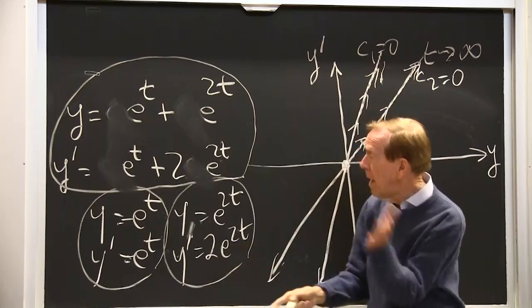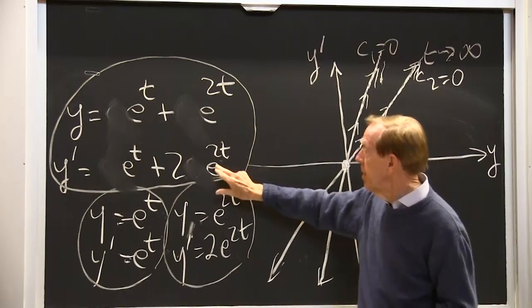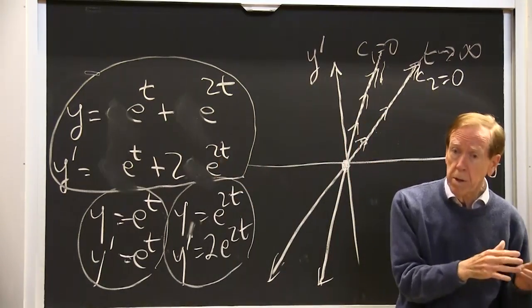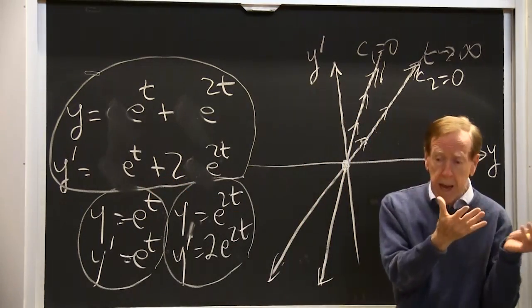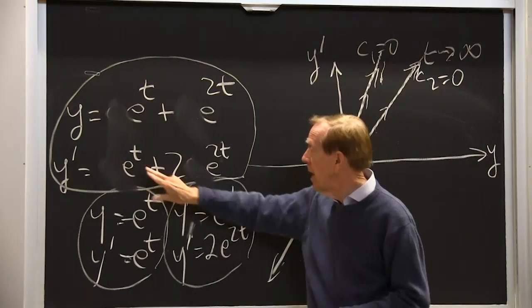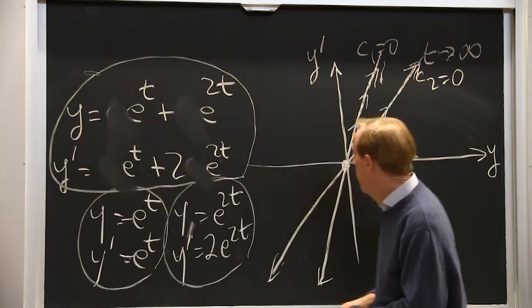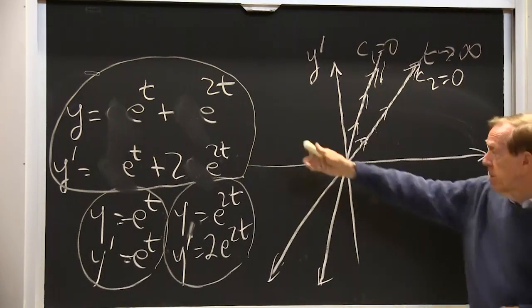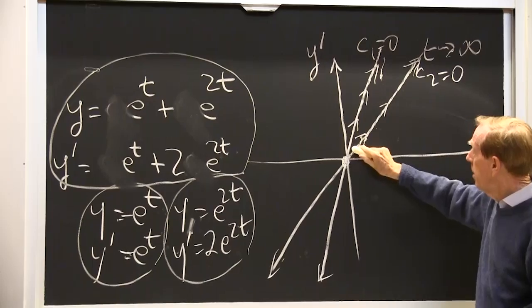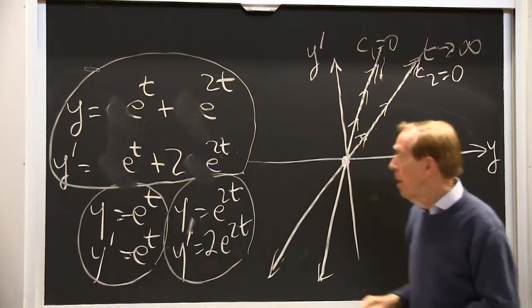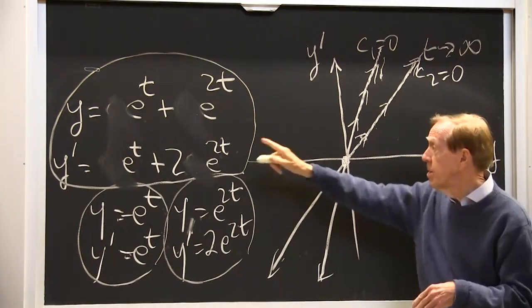The 2 will be the winner out here. But at t equal minus infinity, near the Big Bang, at t equal minus infinity, e to the 2t is even more small. So at t equal minus infinity, or t equal minus 10, let's say, this is e to the minus 10, this would be e to the minus 20, very, very small. These would win.